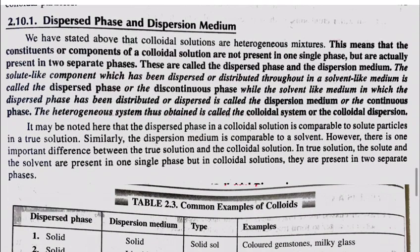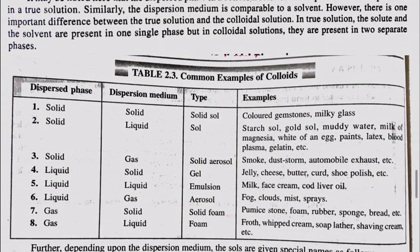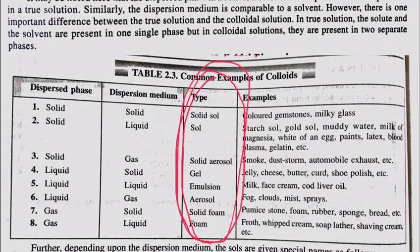Next, there is a table of common examples of colloids. This table has four columns: dispersed phase (which is solute-like), dispersal medium (which is solvent-like), the type of colloid, and the example. The types are what examination questions will be based on.